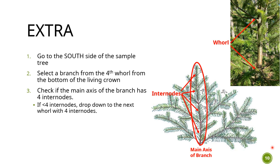You're going to count from the bottom of the living crown four whorls up, then select a branch from the south side of the tree from that whorl. You'll examine the main axis of the branch — basically the center stem. You'll need to check if there are four internodes, which are basically four years of growth. You always start from the outside and count inward. If you don't have four internodes, you need to drop down to the next lowest whorl with four internodes. For example, if you only have one internode, you need to drop down three whorls; if you have two internodes, drop down two whorls.